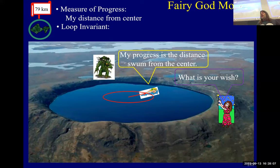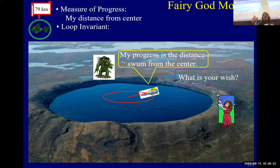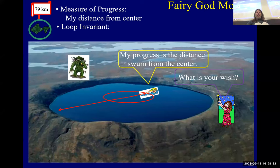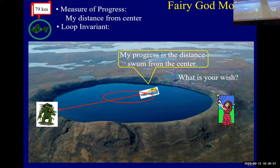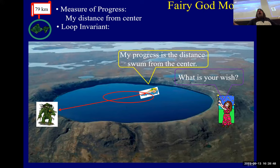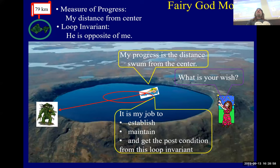Suppose you have some distance from the center, so you're on that circle, and the monster is somewhere. Where do you wish the monster to be? Behind you. You want him as far from you as possible. So our loop invariant is: if you draw a line from where you are to the center and continue it on, he will be as far from you as possible — on the opposite side. Our job is to establish the loop invariant, maintain it while making progress, and then get the postcondition from it.